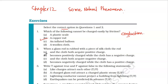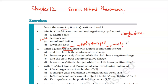Number two: when a glass rod is rubbed with a piece of silk cloth, what happens to the rod? Remember, whenever a glass rod is rubbed with a piece of silk cloth, it is a convention — it will always acquire a positive charge. That means the glass rod will always become positively charged. So the silk cloth will acquire an opposite charge, meaning it will become negatively charged. The correct option is B: the glass rod becomes positively charged while the cloth has a negative charge.